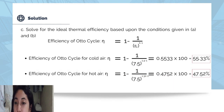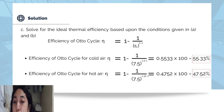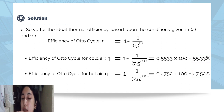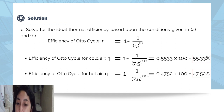For letter C, we solve for the ideal thermal efficiency. The formula is: efficiency equals 1 minus 1 over the compression ratio raised to K minus 1. For cold air: 1 minus 1 over 7.5 raised to 1.4 minus 1 equals 0.5533, or 55.33%. For hot air: 1 minus 1 over 7.5 raised to 1.32 minus 1 equals 0.4752, or 47.52%.